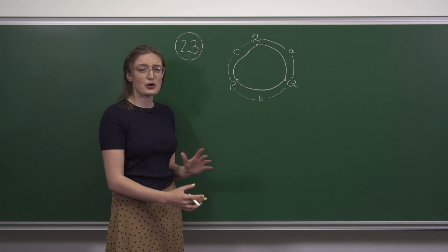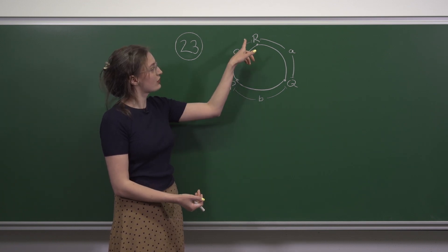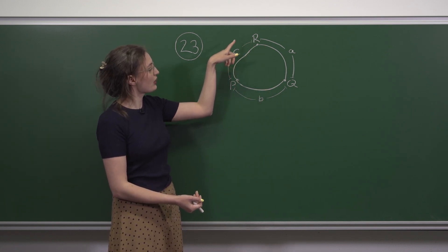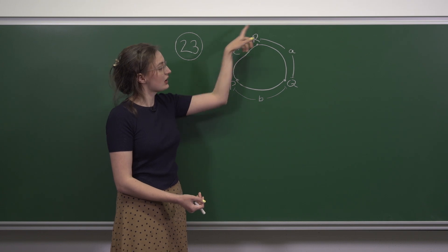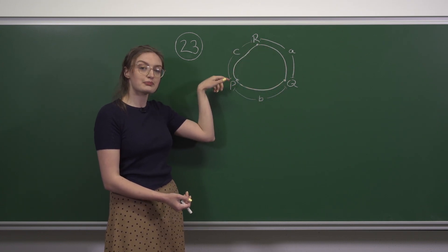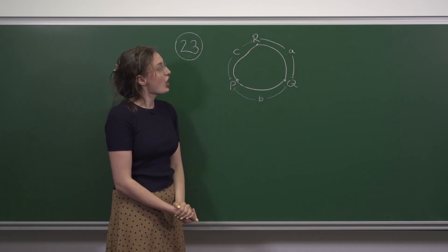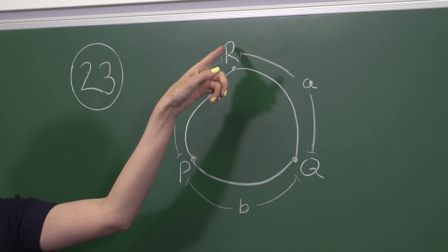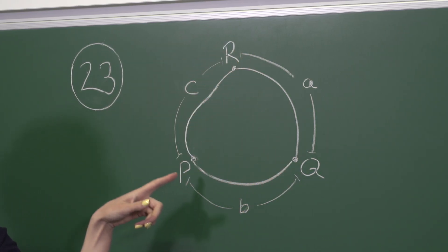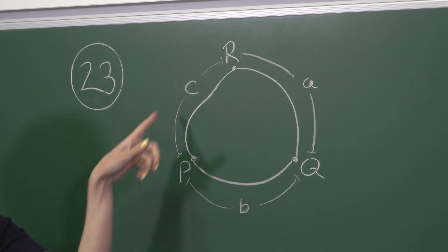Here we need to find a possibility for the length of the roads the whole way from P through the other two towns and back to P. We're told that if we go from R to P via Q that's twice as far as going just straight from R to P.